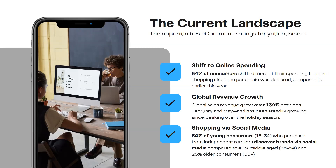Another trend to look for is shopping via social media, which is growing especially with young consumers aged 18 to 34. In a study, 54% of young consumers who purchase from independent retailers discover brands via social media, compared to 43% of middle-aged consumers and 25% of older consumers. It's quite a big market, and being visible on social media is great especially if you want to target the younger and middle-aged demographic.